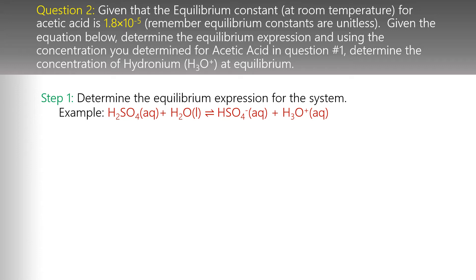To write an equilibrium expression, remember it's the product of the products divided by the product of the reactants. Pure solids and pure liquids are not included, so water doesn't appear. Each species is raised to the power of its coefficient. So the equilibrium expression is: Kₐ = [H₃O⁺][HSO₄⁻] / [H₂SO₄].